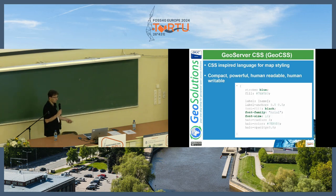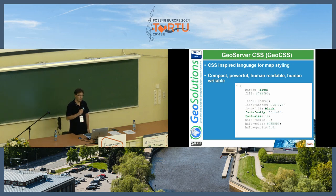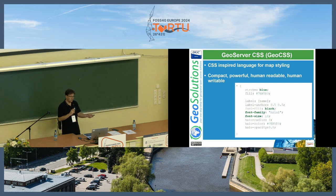GeoServer CSS, or GeoCSS for short, is a CSS-inspired language for map styling. It's compact, powerful, human-readable, and human-writable.